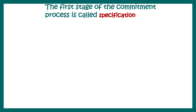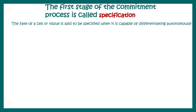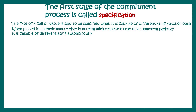The first stage of the commitment process is known as specification. Remember, commitment happens before differentiation — differentiation is the outcome, and commitment is the reason why there would be a differentiated outcome. The first step of commitment is specification: a cell or tissue is said to be specified when it is capable of differentiating autonomously when placed in a neutral environment with respect to a developmental pathway.